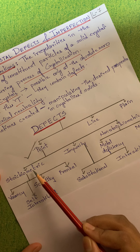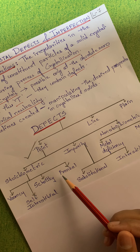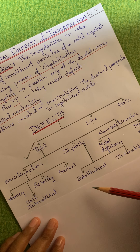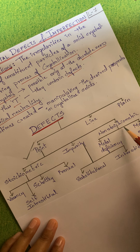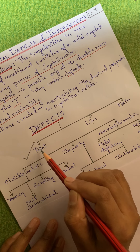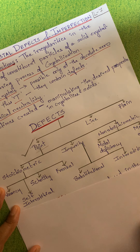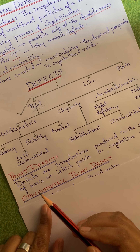Defects are of three types — let's look at the classification. We will mainly be focusing on point defects. The three types are: point defect, line defect, and plane defect. If the defect is only at a particular lattice point, it is called a point defect. If it spans one whole row, it is a line defect. If it spans one whole plane, it is a plane defect.